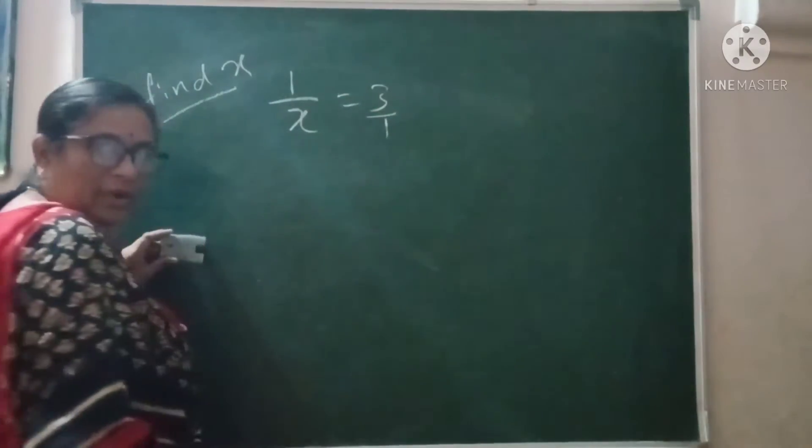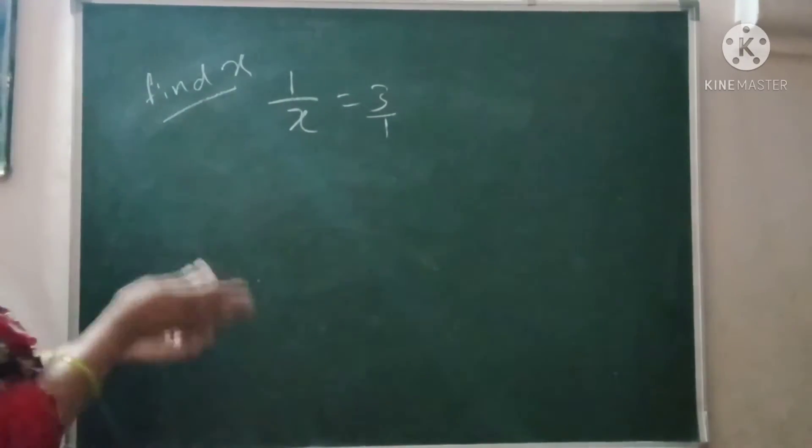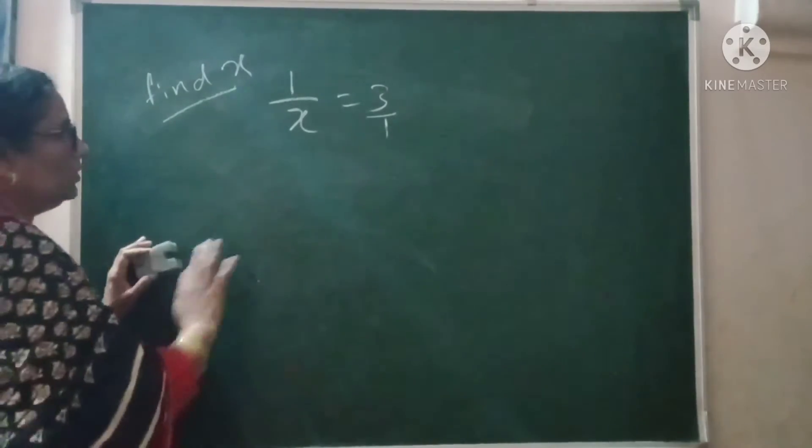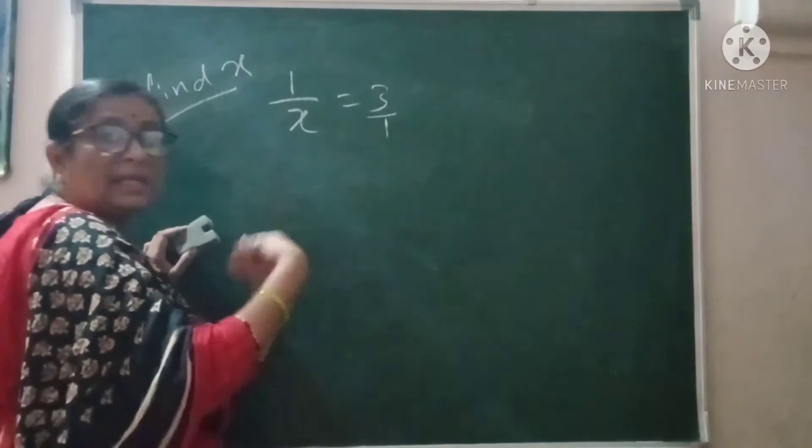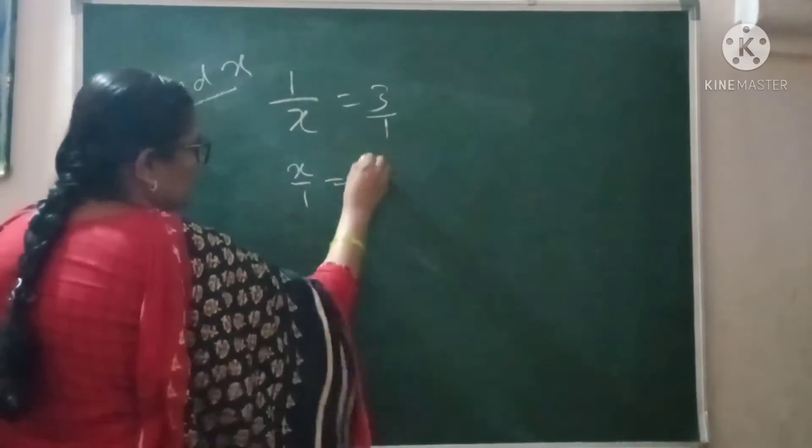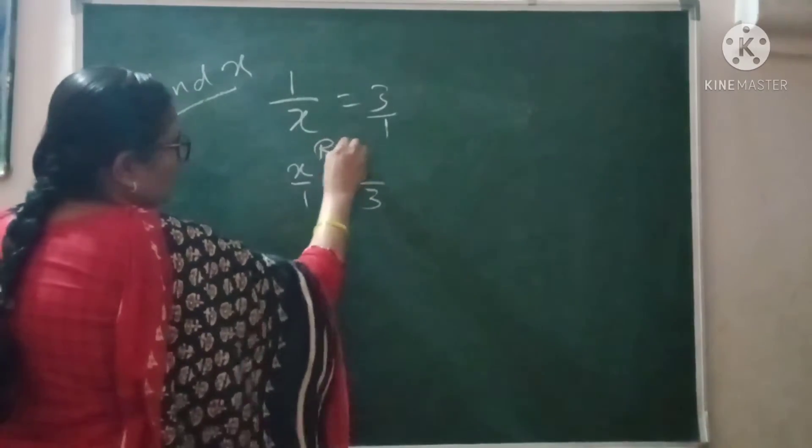1 upon x is equal to 3 upon 1. I will explain how to solve this one. Just go with this way. Taking a reciprocal of both. See, x upon 1, then this is 1 upon 3. So what I do? I take the reciprocals.